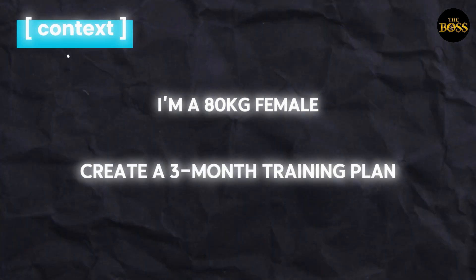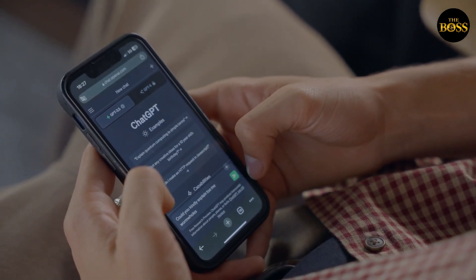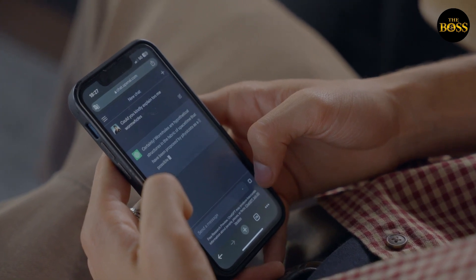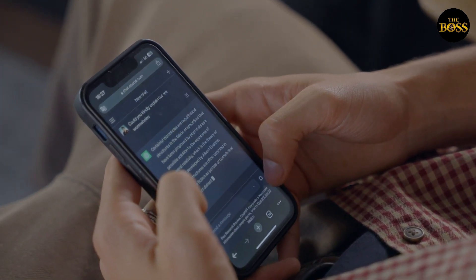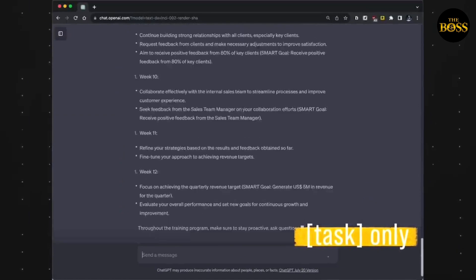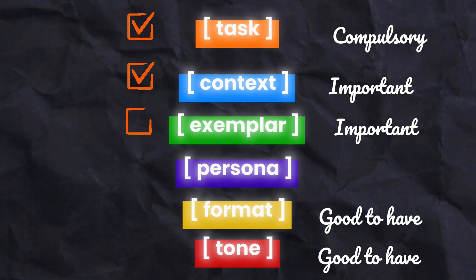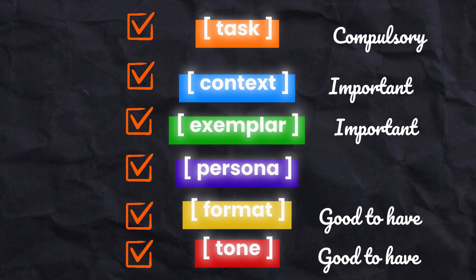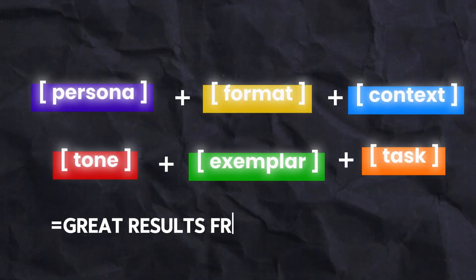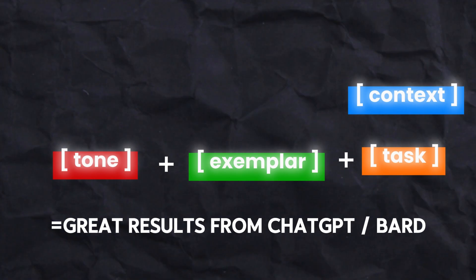Here's a sample prompt: 'I'm an 80kg female. Create a 3-month training plan.' The first part is the context, followed by the task. The task is ranked as the most important in outcome generation because with the task alone, there will still be some form of output. However, if you just input the context without the task, you won't generate anything useful. To summarize, it is compulsory to have a task in your prompt, and it is also important to have a context and exemplar. It would be nice to have a persona, format, and tone. Whenever you need to write a prompt, always use this checklist to generate the best outcome for ChatGPT or Bard. You do not need all six components every time.